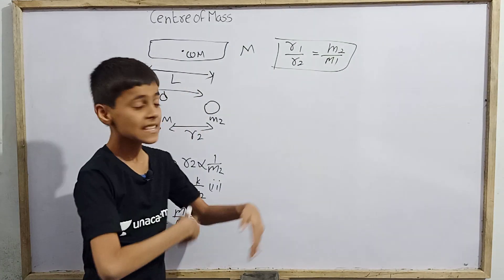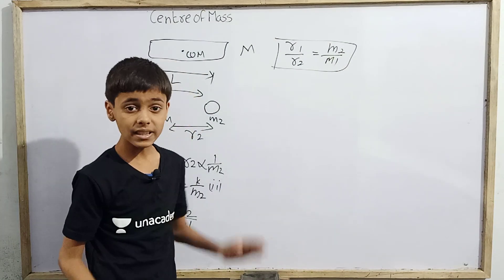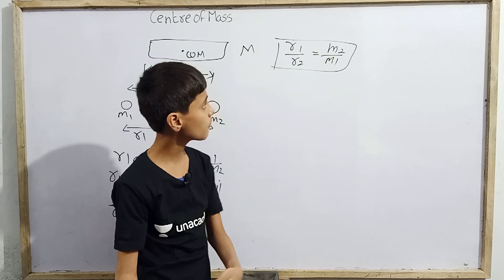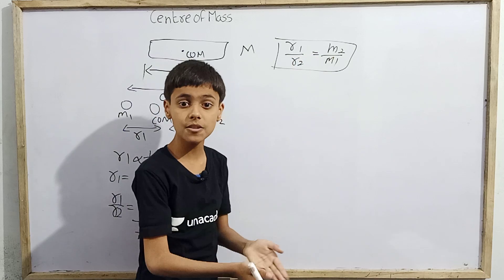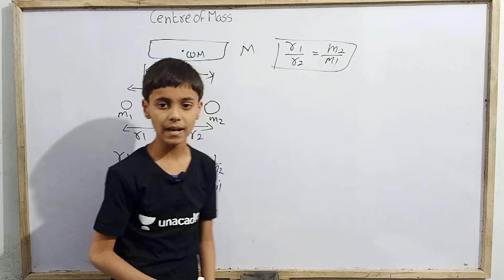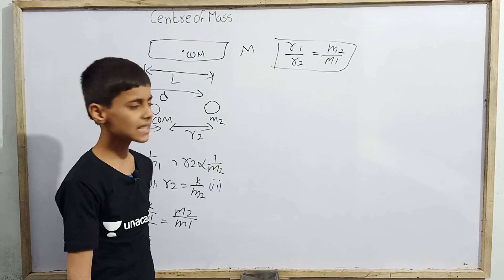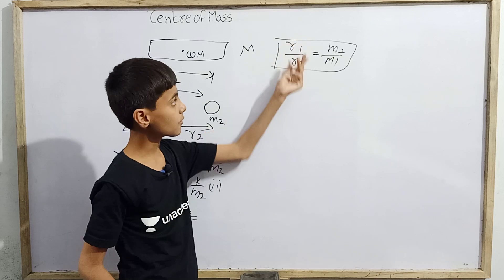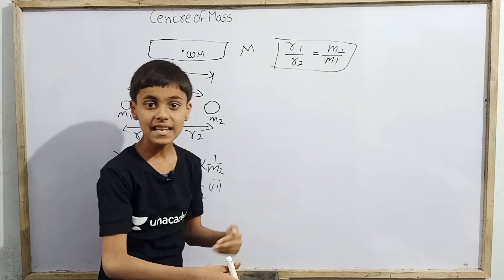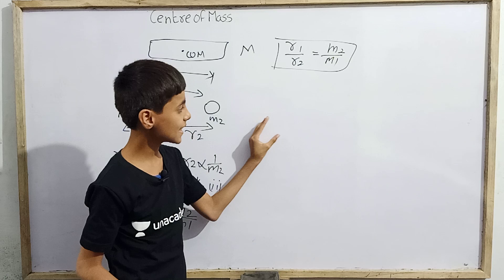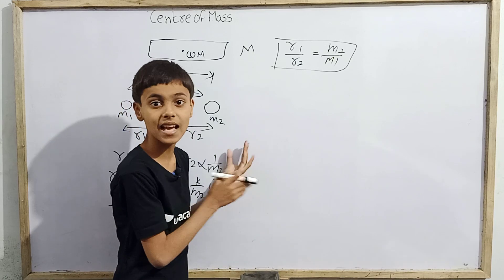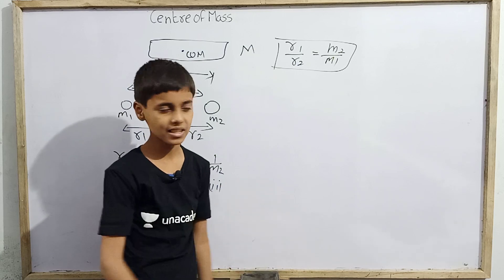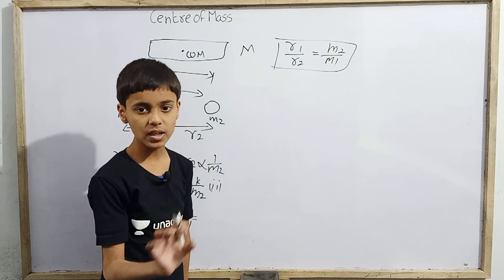So the very important conclusion is: r1 by r2 equals m2 by m1. This is a very important equation. Here r1 is the separation between m1 and the center of mass, while r2 is the separation between m2 and the center of mass. Using this equation, you can easily define the position of the center of mass.